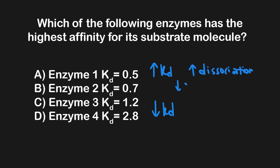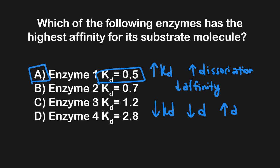If we have high dissociation, we have low affinity — because these molecules aren't staying together; they are dissociated. The opposite holds for a low KD value: low dissociation means high affinity. Since the question asks for the highest affinity, we need to look for the lowest KD value. In this lineup, that is 0.5, making A the correct answer. A helpful strategy: questions asking for highest, lowest, most, or least can often be narrowed to a 50-50 by eliminating intermediate values. Here, 0.7 and 1.2 are intermediate between the extremes of 0.5 and 2.8.